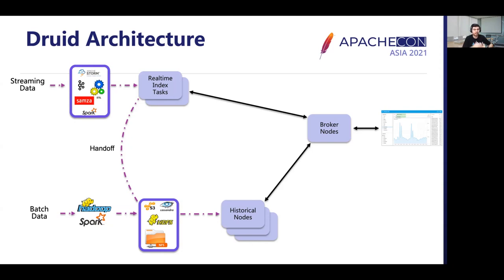These segments are eventually persisted and handed over to deep storage. Deep storage can be any distributed file system which acts as a permanent backup of your data. If you need to do ETL-like data enrichment or joining multiple streams of data, you can do it in a separate ETL step before sending the data to the Druid real-time index tasks. These index tasks are highly scalable and you can run multiple of them.